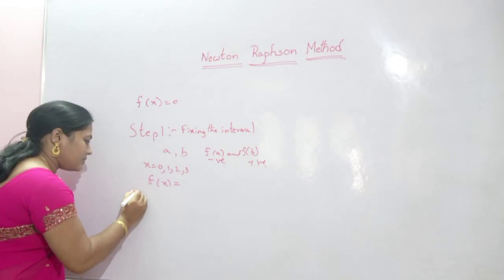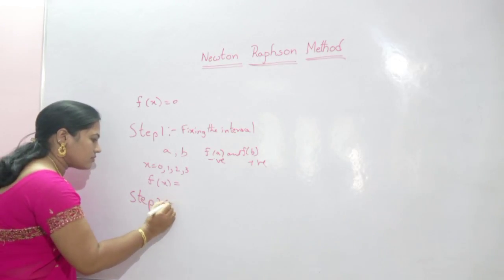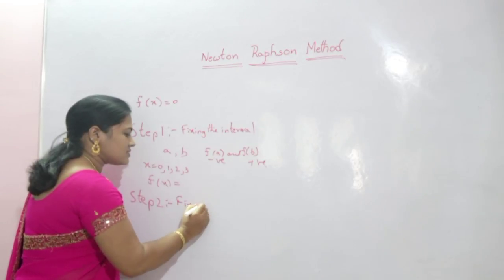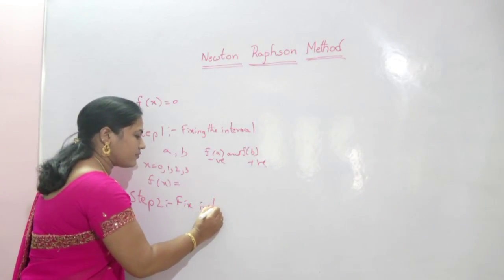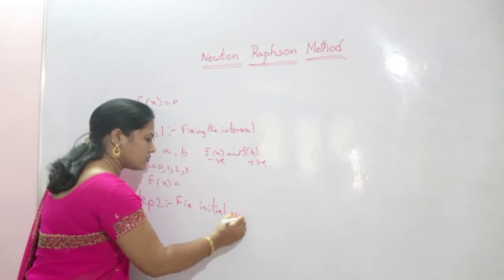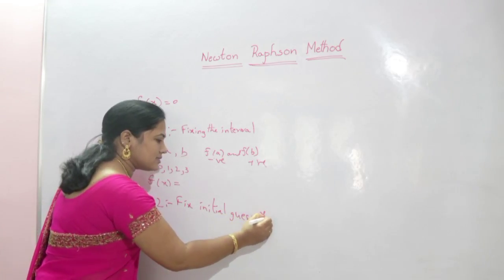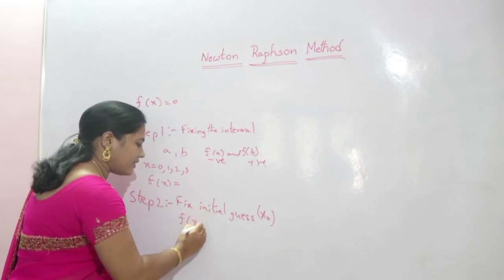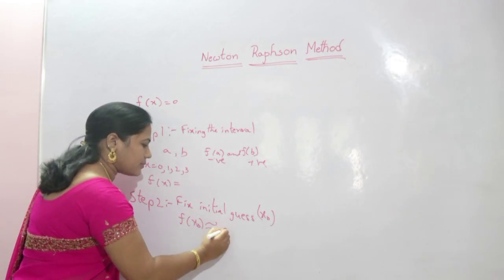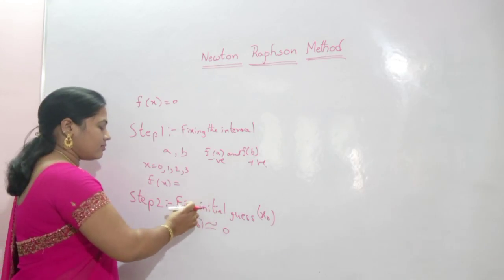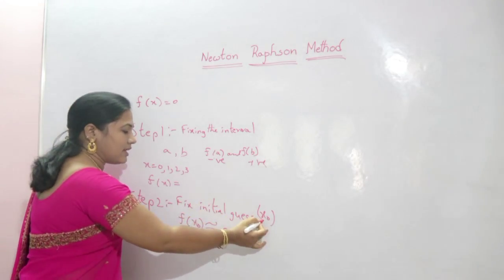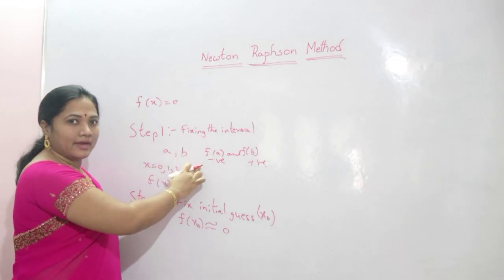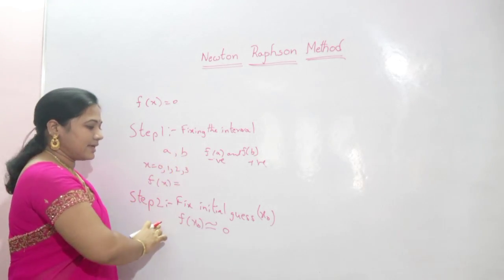The next step is to fix the initial guess. Initial guess x₀ such that f(x₀) is approximately 0, and x₀ should be in between the interval A and B. That is the second step.